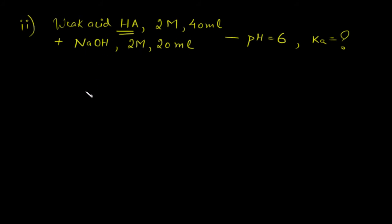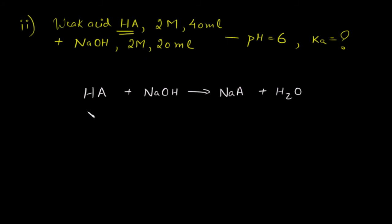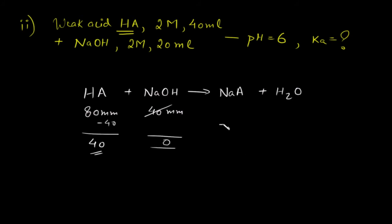Whenever we add NaOH to a weak acid HA, it will react to give salt NaA plus water. HA has 2 × 40 = 80 millimoles. NaOH has 40 millimoles. In a balanced 1:1 reaction, 40 millimoles of NaOH reacts with 40 millimoles of HA. After the reaction, HA remaining = 40 millimoles, NaOH = 0, and salt formed = 40 millimoles.